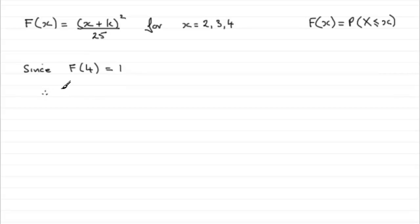Therefore, we've got 4 plus k all squared divided by 25 equals 1. So what I'd want to do here is multiply both sides by 25, giving me 4 plus k all squared equals 25.